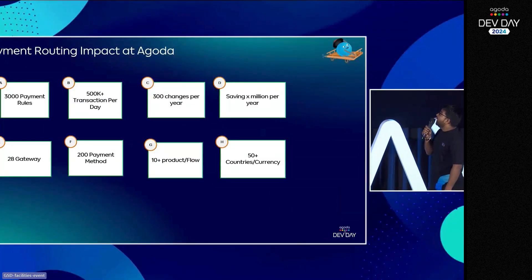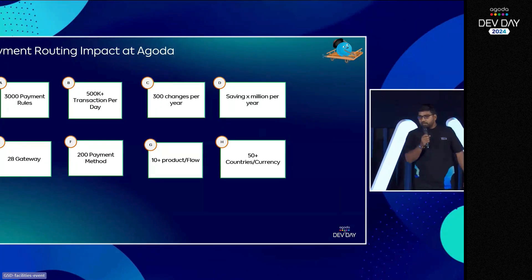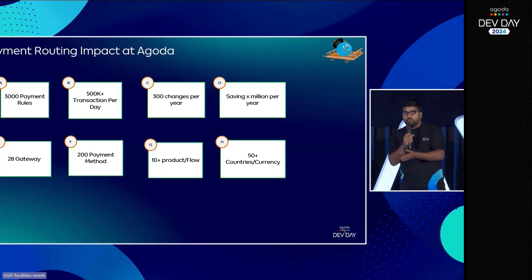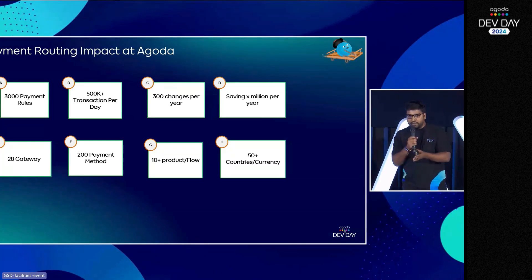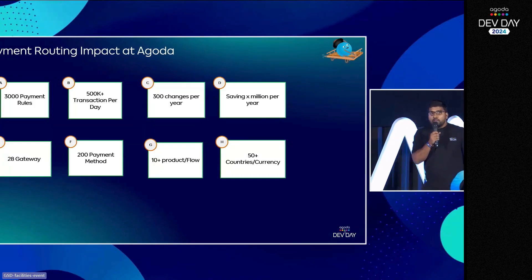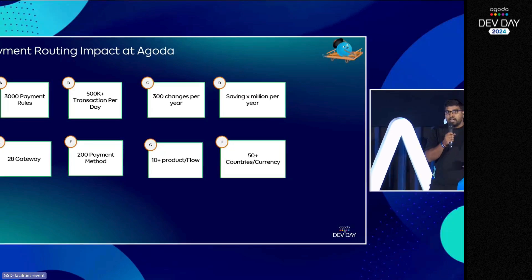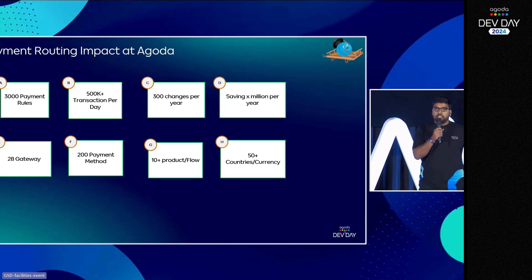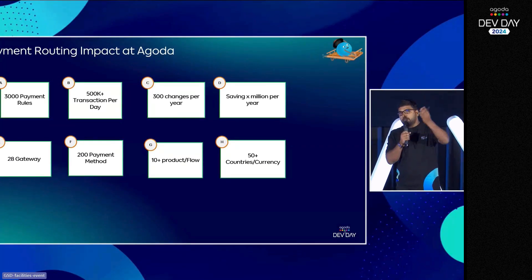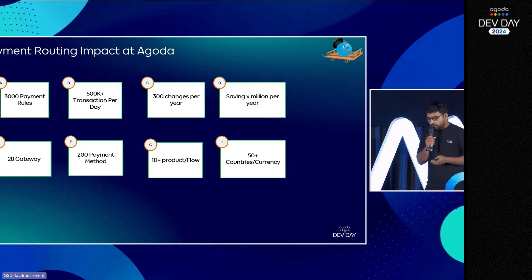Looking at the impact of payment routing across Agoda — all transactions — we are making almost daily changes in payment routing. Product comes and says they're getting a better deal, so change the rule. We are saving millions of dollars per year just by changing rules through cost optimization. Also, with 28 gateways, many sometimes randomly go down, so the rules must have a fallback for each request so customers don't feel the pain when a gateway is down.